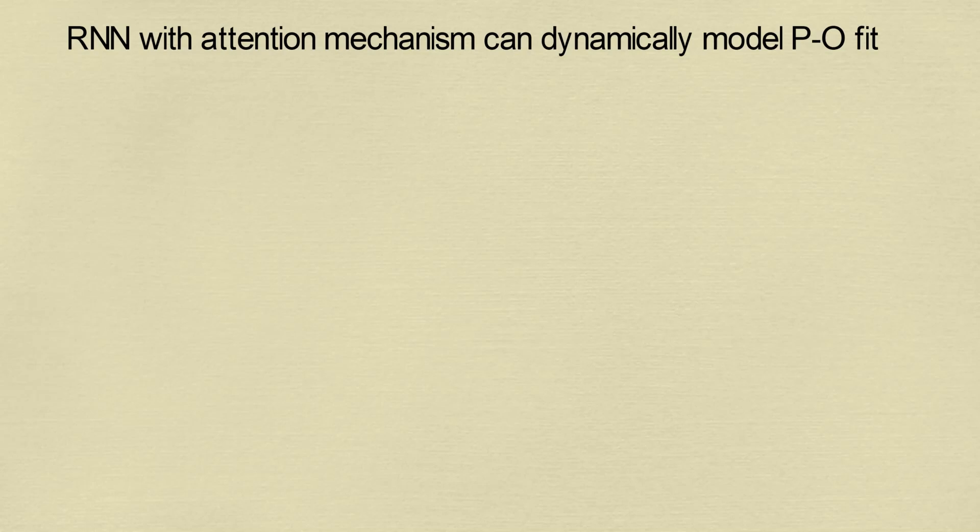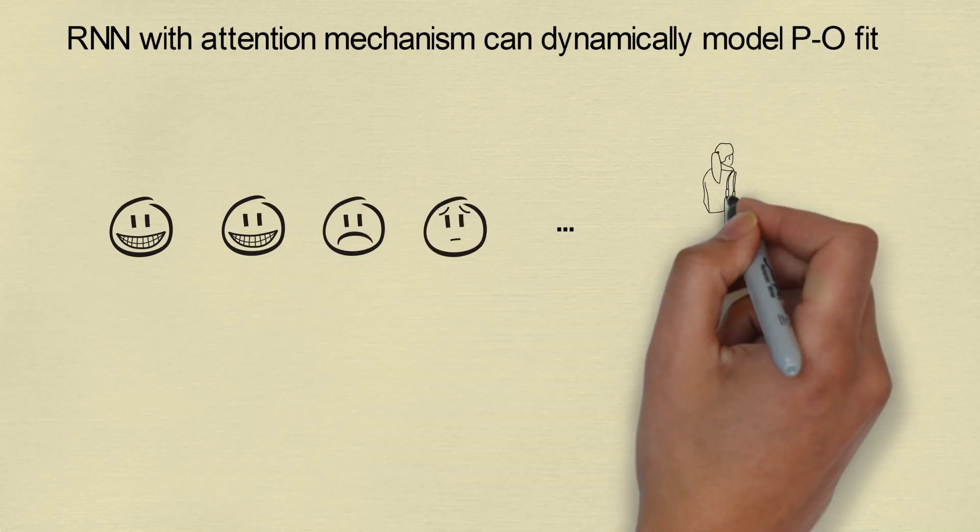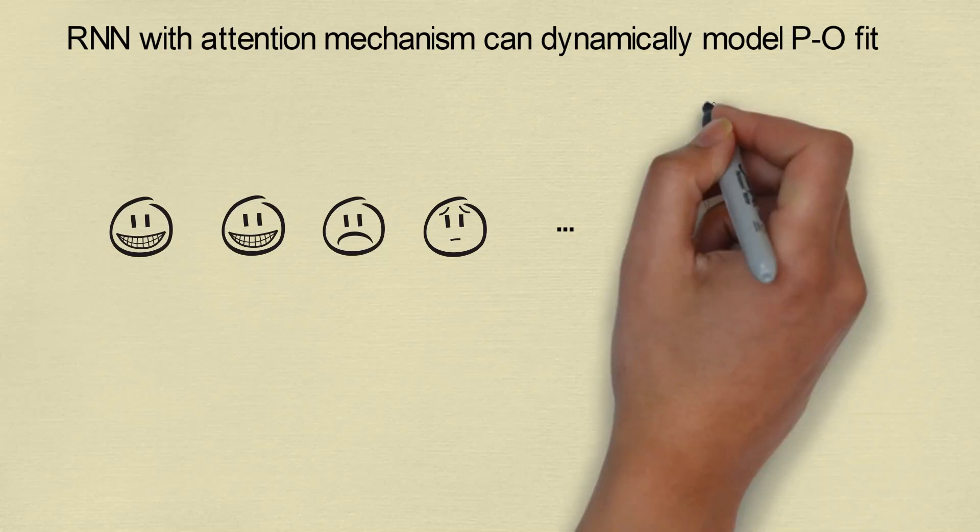In this way, our model can give you information. For example, Alice's recent person-organization fit is abnormal and she is highly possible to leave the company in two months. Check what happened.